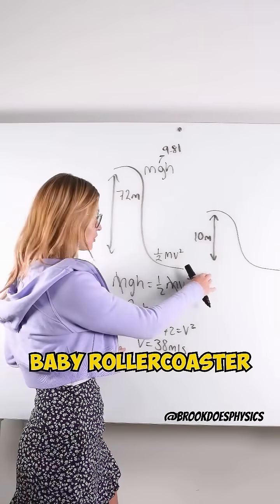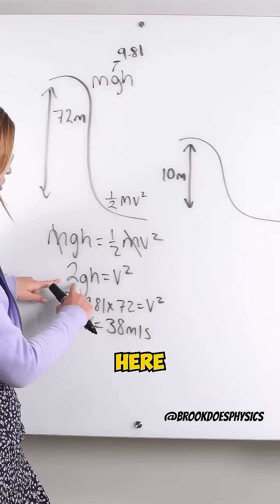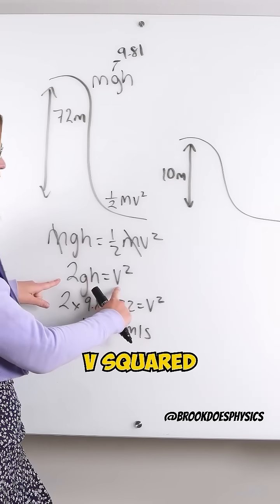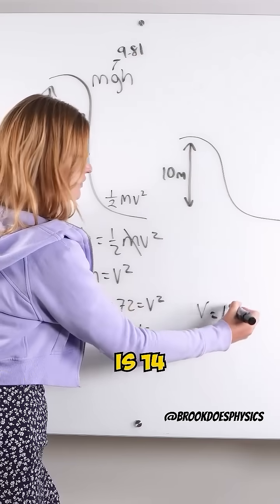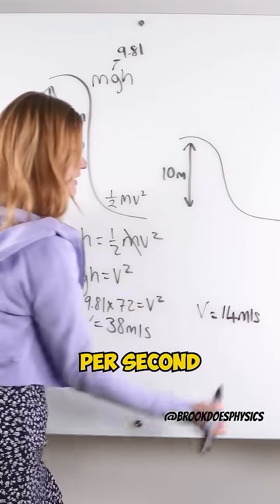But for our baby roller coaster, when we plug in our math here, 2GH is equal to V squared, we find the final speed for that one is 14 meters per second. Follow me for more physics content like this.